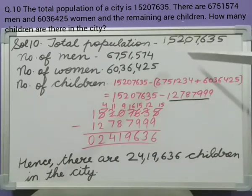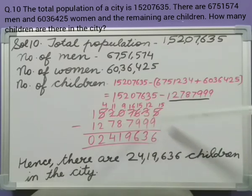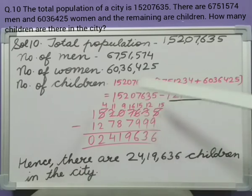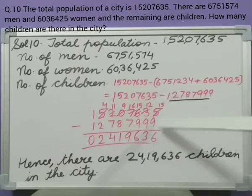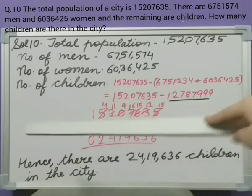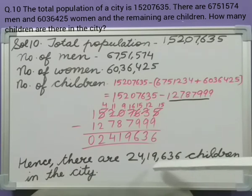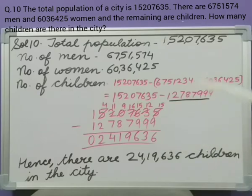We will subtract it from the total population. After subtracting, remember the steps of borrowing while subtracting. After subtracting, we got 24,19,636. Hence, there are 24,19,636 children in the city.